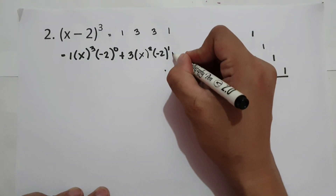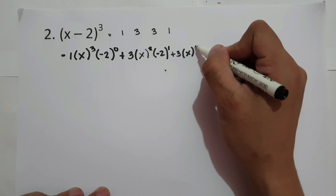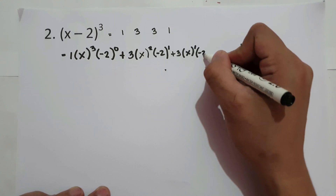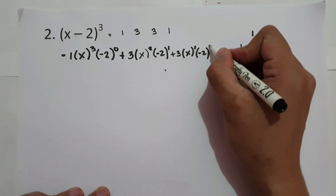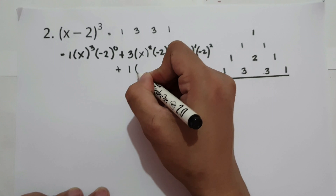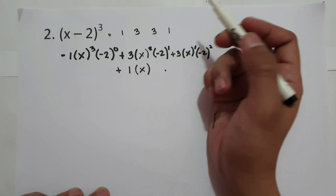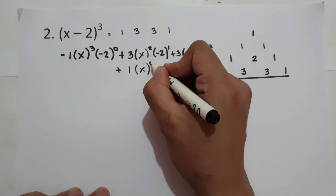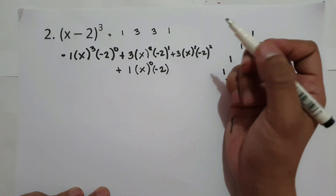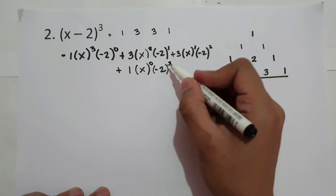The third coefficient is 3, times x — the exponent of x is now 1, going 3, 2, 1. The second term negative 2 is raised by 0, 1, and this time 2. Plus, the last coefficient is 1, times x — so what will be the exponent of x? That is 3, 2, 1, so it is 0. And negative 2 is raised to the highest exponent, which is 3, going 0, 1, 2, 3. Now let us simplify our answer.